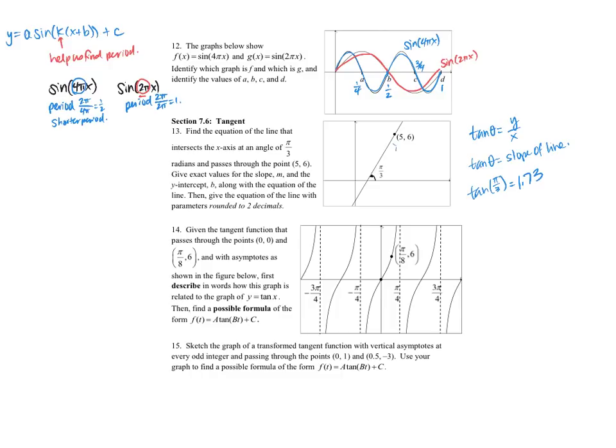And then I know my point on my line is this, so if I have a slope and a point I can use the point slope form. Y minus y1 equals m times x minus x1, and I can plug in my x1, y1, and my slope m. So y minus 6 equals 1.73 times x minus 5, and that's the equation of my line.